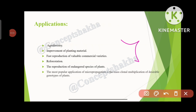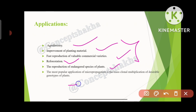Applications of clonal propagation include: use in agroforestry, improvement of planting material, fast reproduction of valuable commercial varieties, reforestation, and reproduction of endangered plant species. The most popular application is the mass clonal propagation of desirable genotypes — we do not have to grow plants one by one; we can produce many plants in bulk according to the genotype we need.